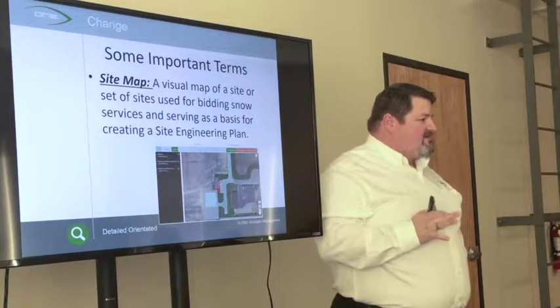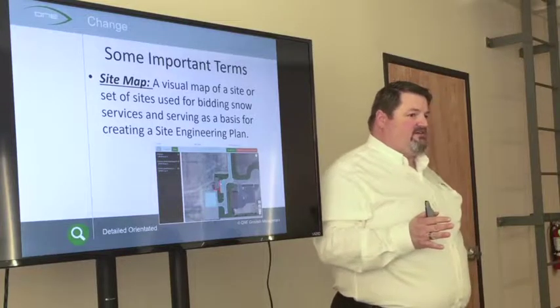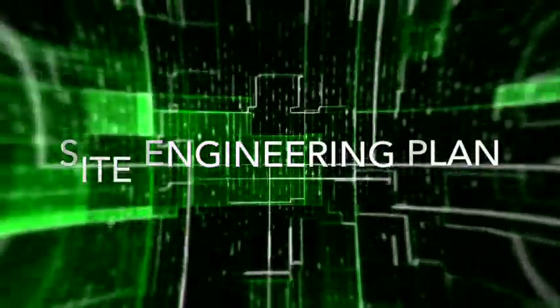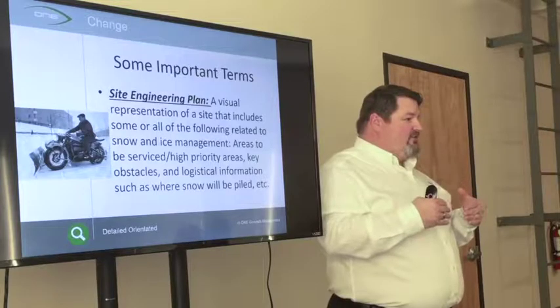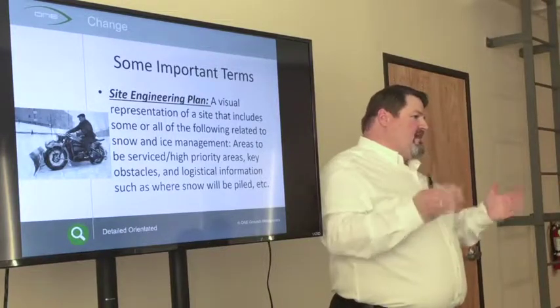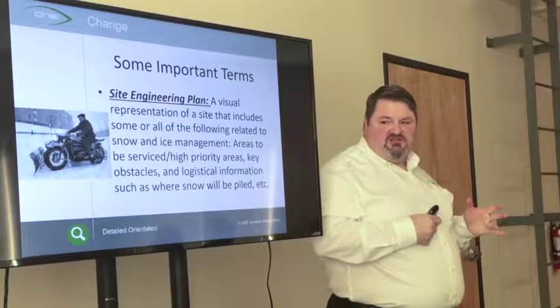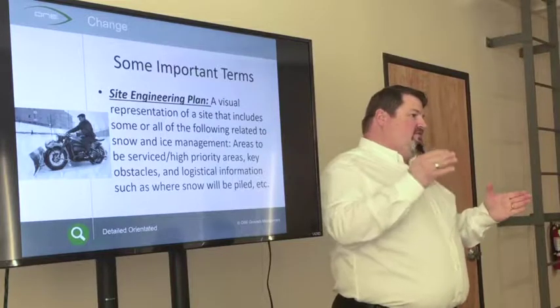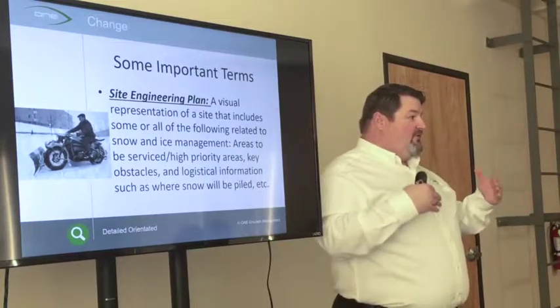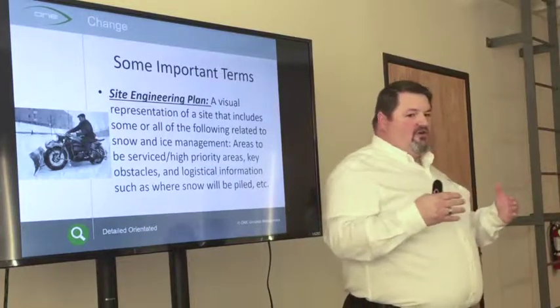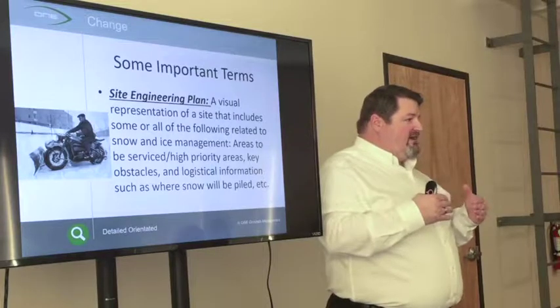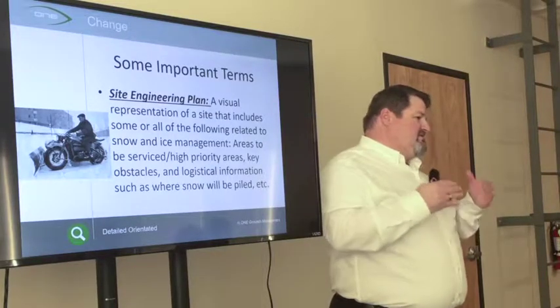A Site Map is simply the boundaries of the site showing what you need to service. A Site Engineering Plan incorporates much more detail than just a site map — it's a visual representation that includes hazards, speed bumps, curbs that jut out, parking blocks, and other features that when covered by six inches of snow you can no longer see and might plow right through.